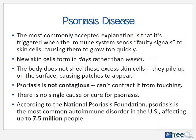The most commonly accepted explanation is that psoriasis is triggered when the immune system sends faulty signals to skin cells, causing them to grow too quickly. These new skin cells form in days rather than the normal cycle of weeks, and the body cannot shed these excess skin cells, so they pile up on the surface, causing patches that are whitish or silvery in color.